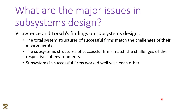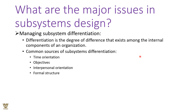Lawrence and Lorsch's findings on subsystem design indicate that the total system structure of successful firms matches the challenge of the overall environment, and the subsystem structure of successful firms matches the challenges of their respective sub-environments. This alignment is the key ingredient for a successful work system where all subsystems work in tandem and cooperation with one another.